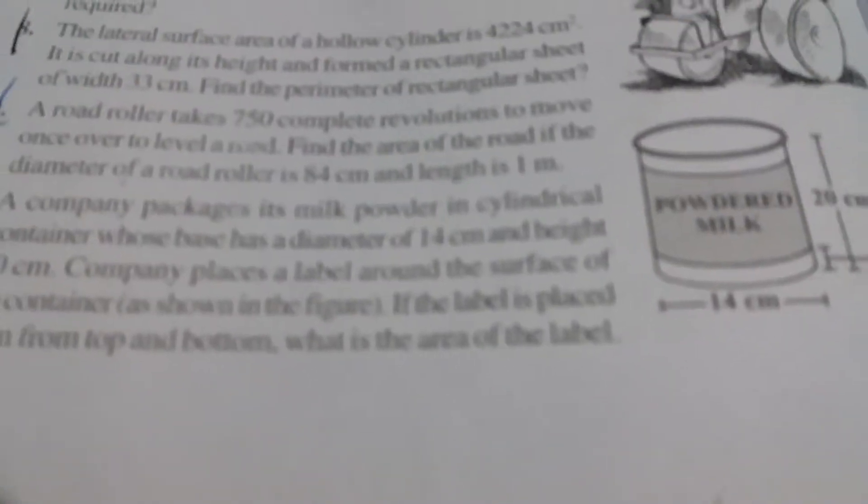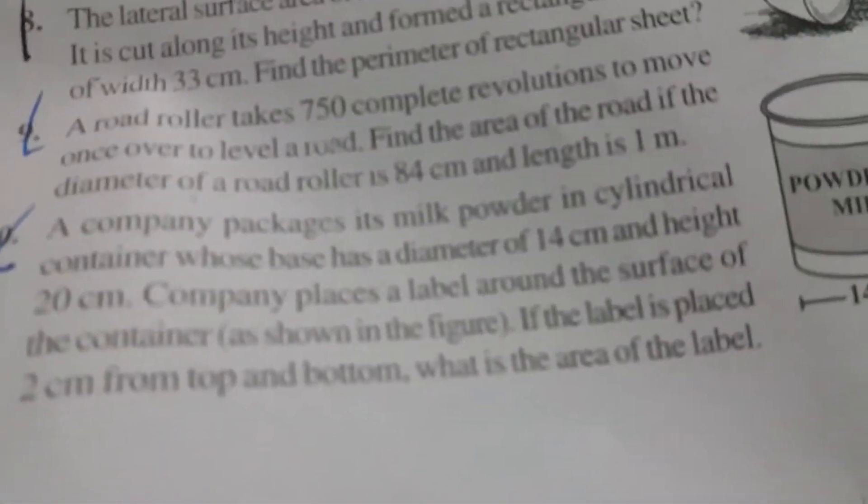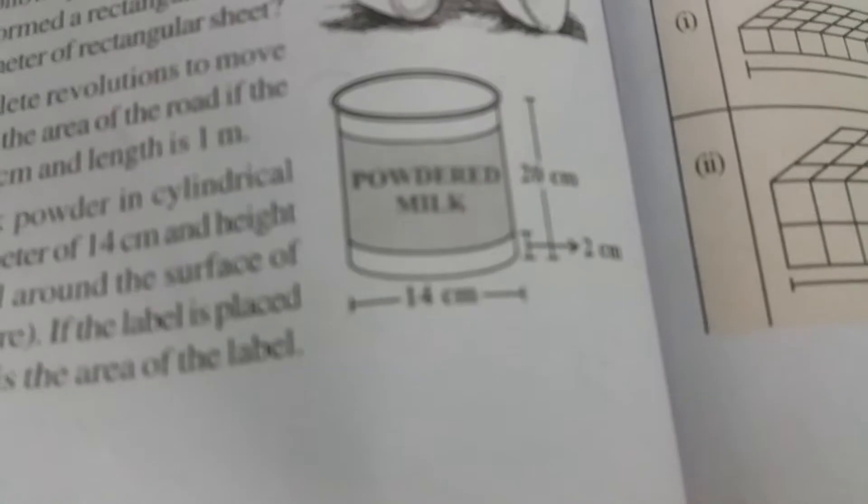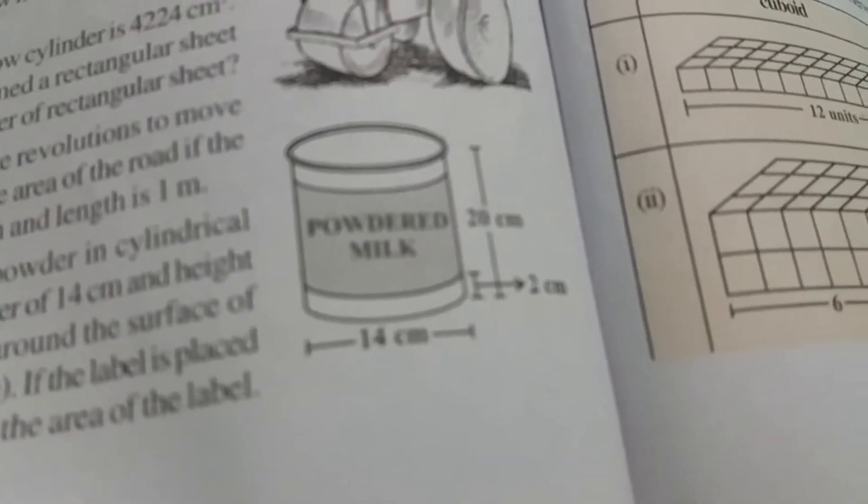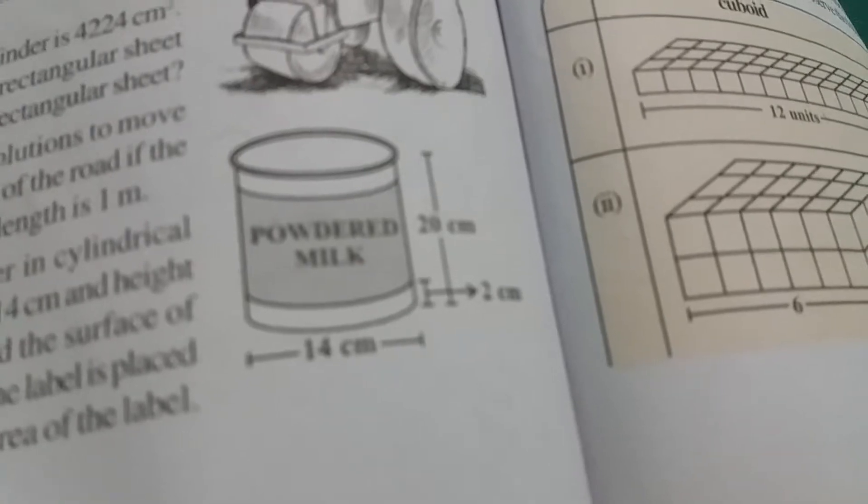See the question clearly. Now here there is a label which you can see here, powdered milk. So that label is around that cylindrical shape.